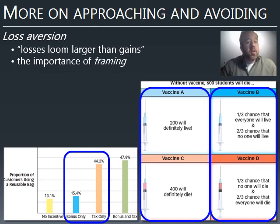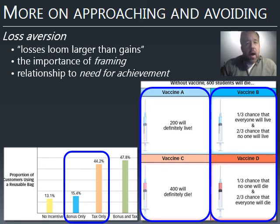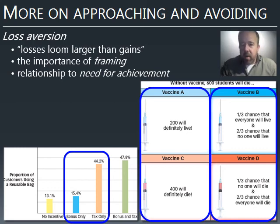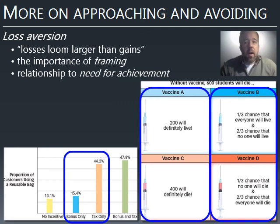Framing influences not just monetary decisions but everything up to and including public policy. Gain versus loss framing is also related to the need for achievement: people with a high need for achievement are often more motivated by the prospect of gains, while people with a low need for achievement are often more motivated by the prospect of failures or losses. The description matters.